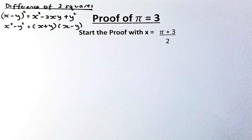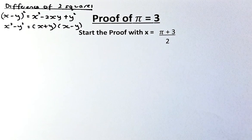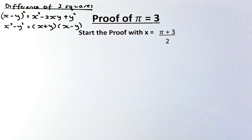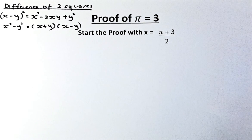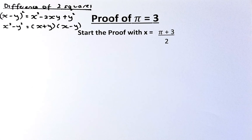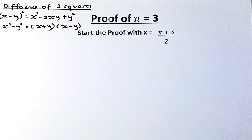We are going to start the proof with x equals pi plus 3 over 2. But before that, we need to know two mathematical formulas. The first one is the difference of two squared: (x minus y) squared equals x squared minus 2xy plus y squared. The second one is x squared minus y squared equals (x plus y)(x minus y). So without further ado, let's start the proof.